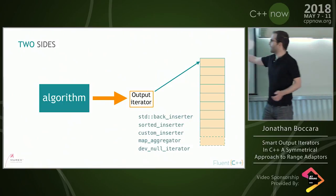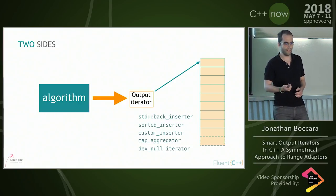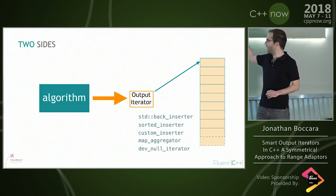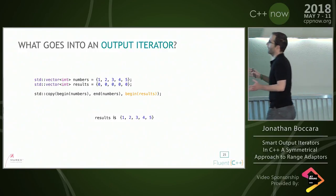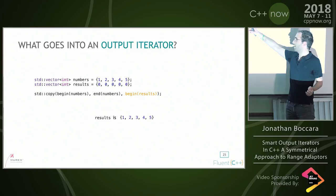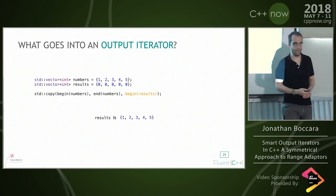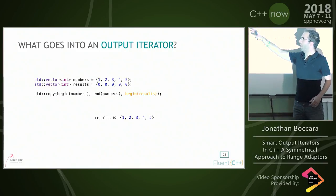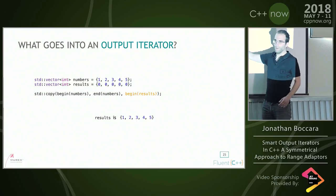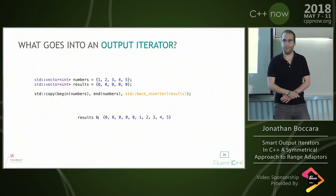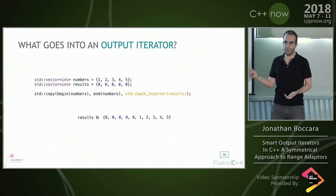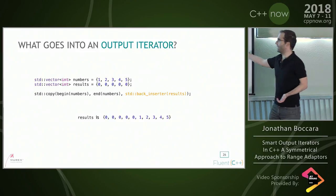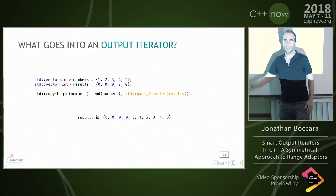There's one smart output iterator that's already in the standard library, which is back_inserter. We're going to go through that one and then other ones that are not standard. The most basic thing you can put into an output iterator is probably an iterator coming from a standard container — copy overrides the output. Now, if I replace that with back_inserter, when you pass it something, it doesn't just send it through to the container; it calls push_back on the container it's bound to.